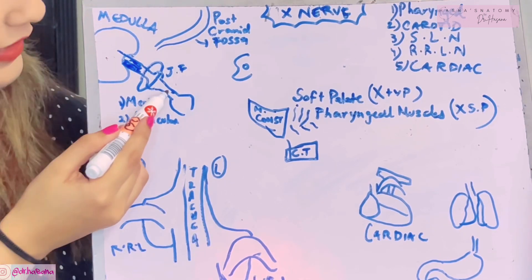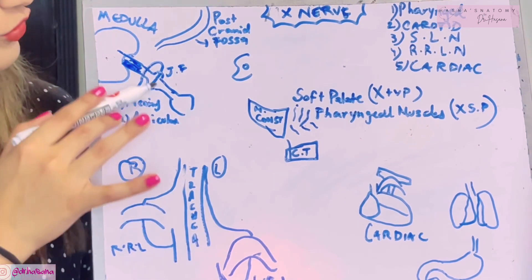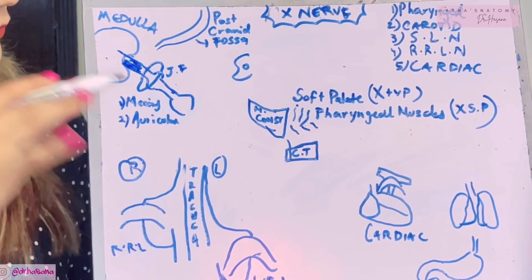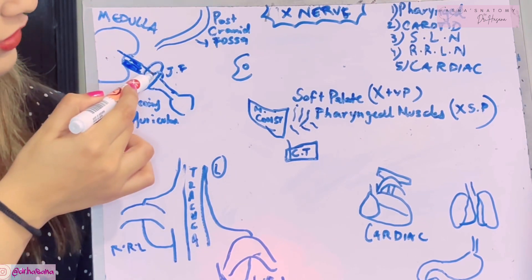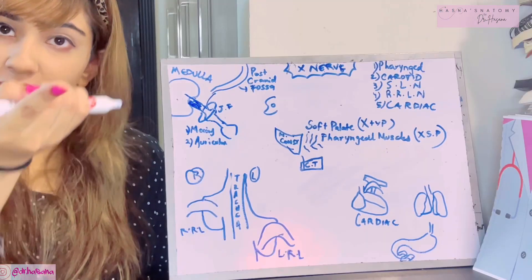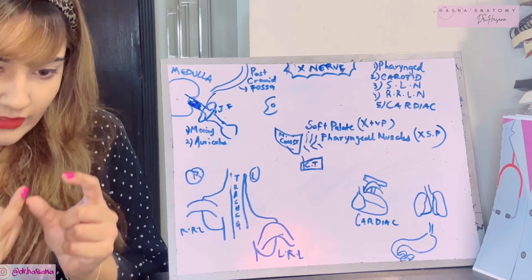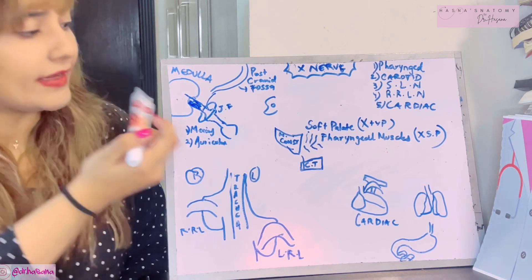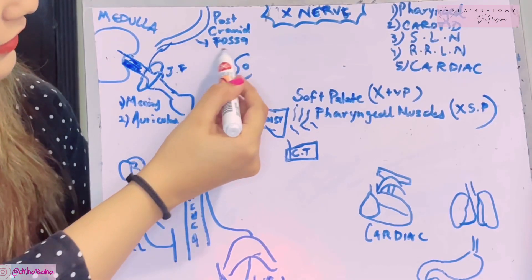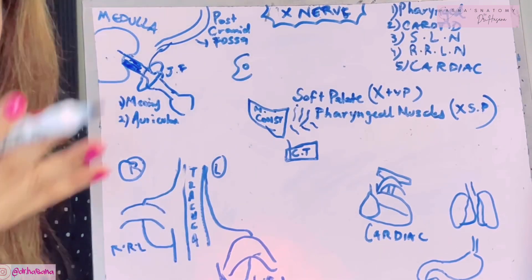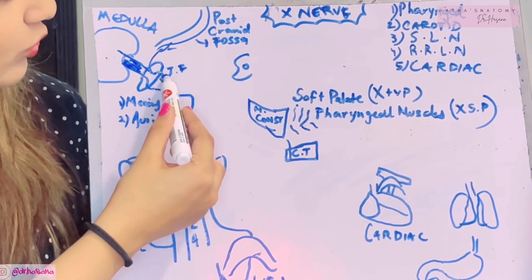In the jugular foramen there is a ganglion of the vagus nerve known as the superior ganglion, and below it there is an inferior ganglion. From the superior ganglion, the first branch is the meningeal branch, which re-enters the cranial cavity — it's a recurrent branch — and goes to supply the meninges or dura mater of the posterior cranial fossa. The second branch is the auricular branch, which goes to the external acoustic meatus through the tympanomastoid fissure, supplying the tympanic membrane, part of the external acoustic meatus, and the root of the auricle.